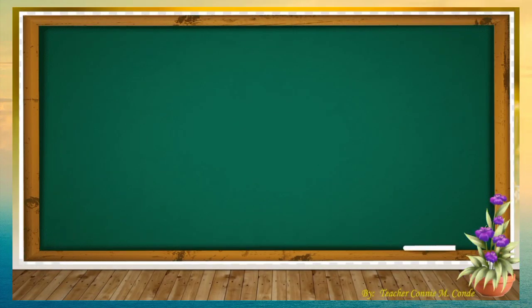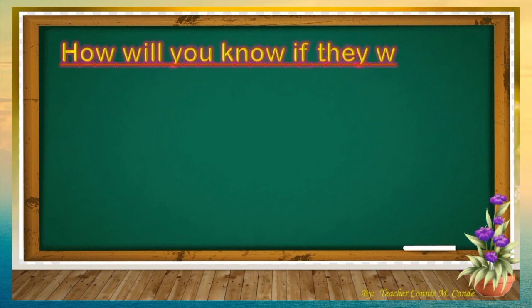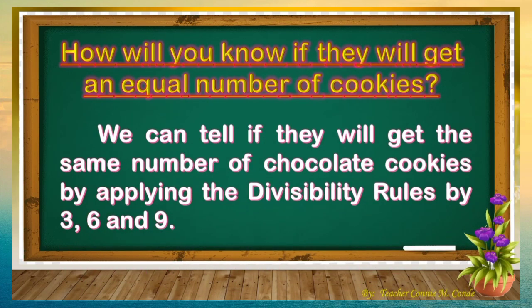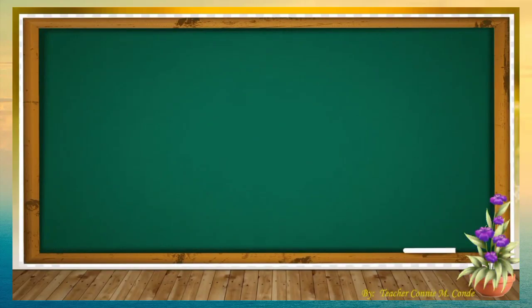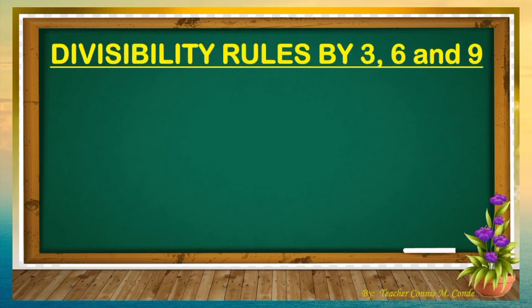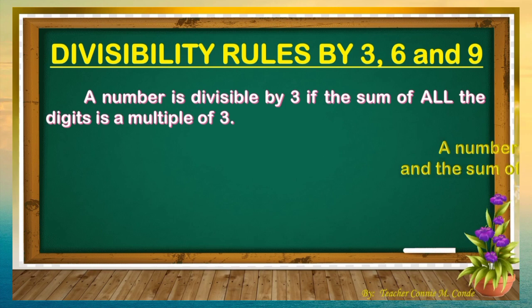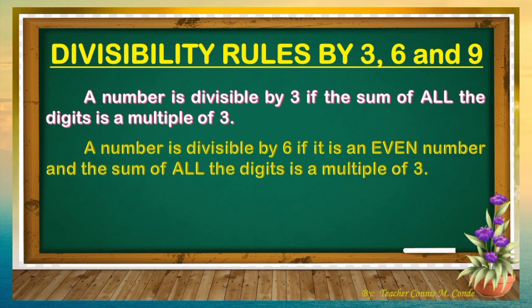The second question in our story problem is: How will you know if they will get an equal number of cookies? The answer is: We can tell if they will get the same number of chocolate cookies by applying the divisibility rules by 3, 6, and 9 which we have learned. In summary: a number is divisible by 3 if the sum of all its digits is a multiple of 3; divisible by 6 if it is an even number and the sum of all the digits is a multiple of 3.